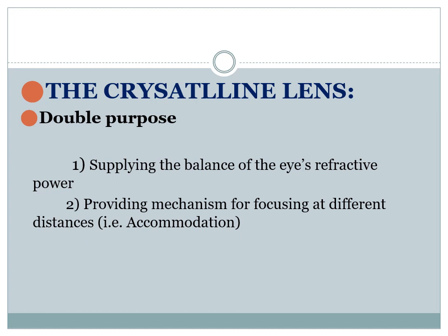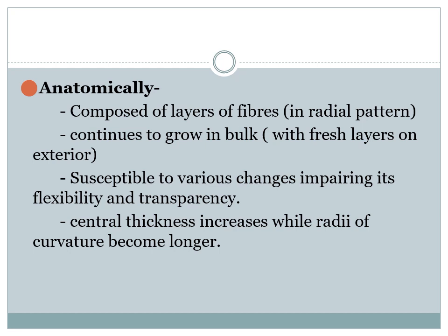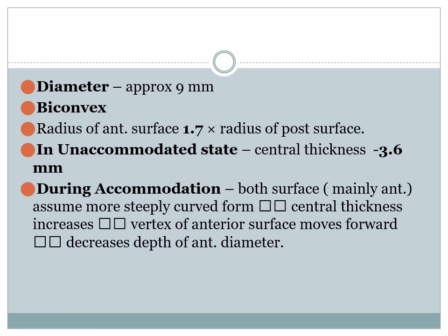The crystalline lens has a double purpose: it supplies the balance of the eye's refractive power and also provides a mechanism for focusing at different distances, which is called accommodation. Anatomically it is composed of layers of fibers in radial patterns and continues to grow in bulk with fresh layers on the exterior. The diameter of the lens is about 9 mm and it is biconvex. The radius of the anterior surface is 1.7 times more than the radius of the posterior surface. In the unaccommodated state, central thickness is around 3.6 mm. During accommodation, both surfaces — mainly the anterior — become more steeply curved, central thickness increases, and the vertex of the anterior surface moves forward, decreasing the depth of the anterior chamber.